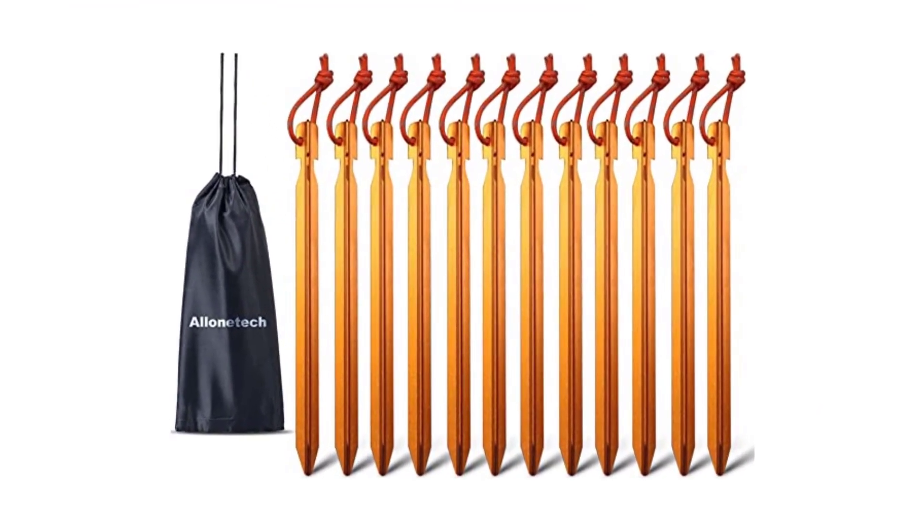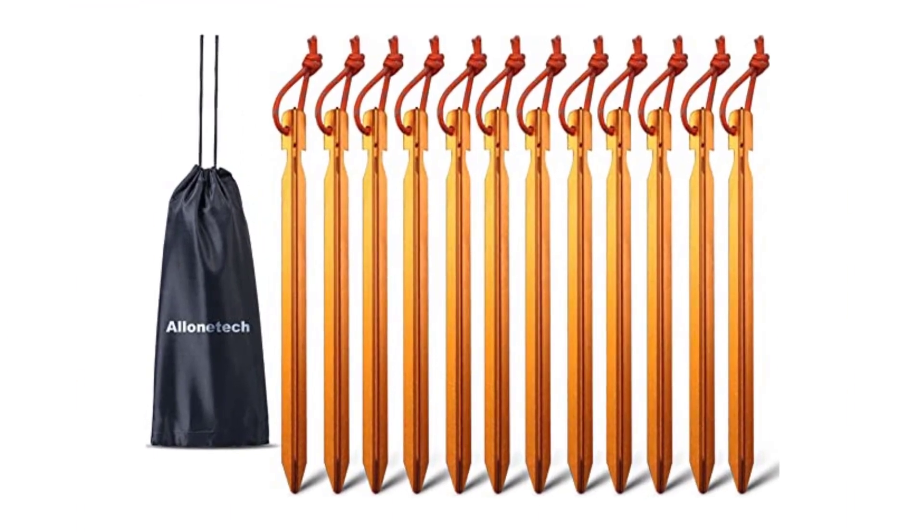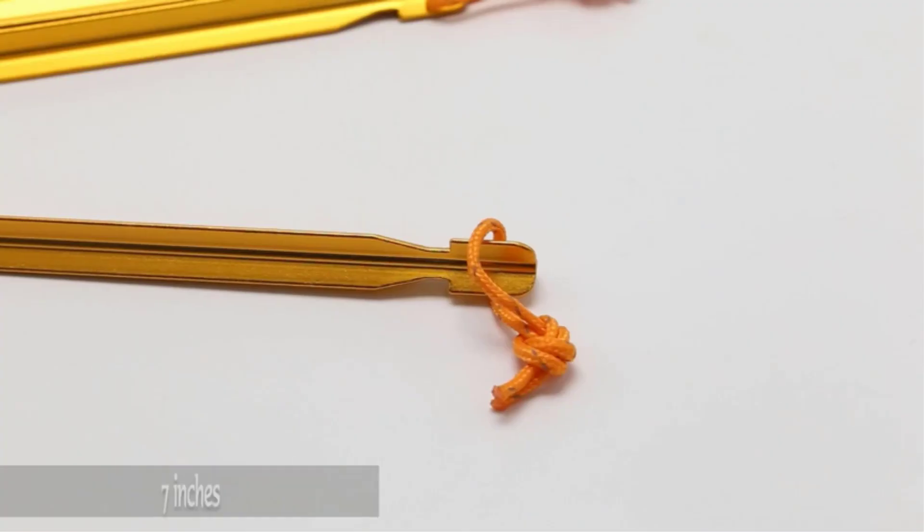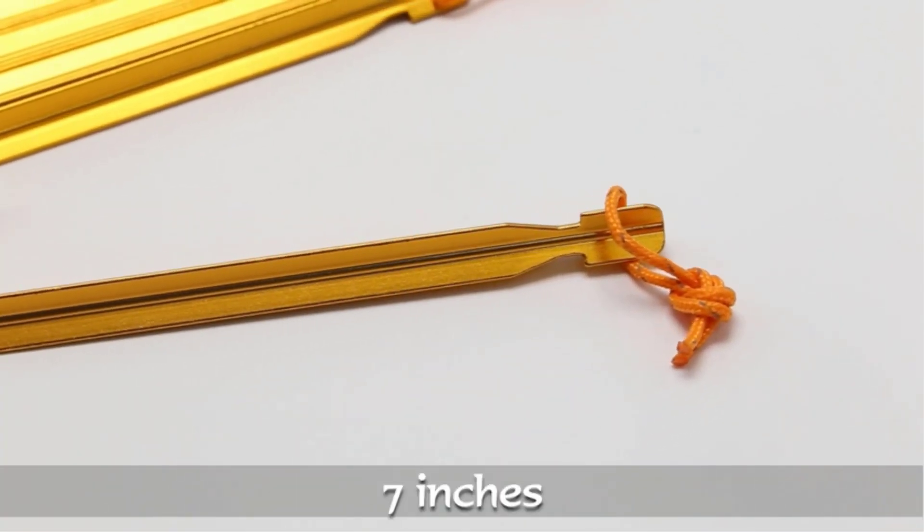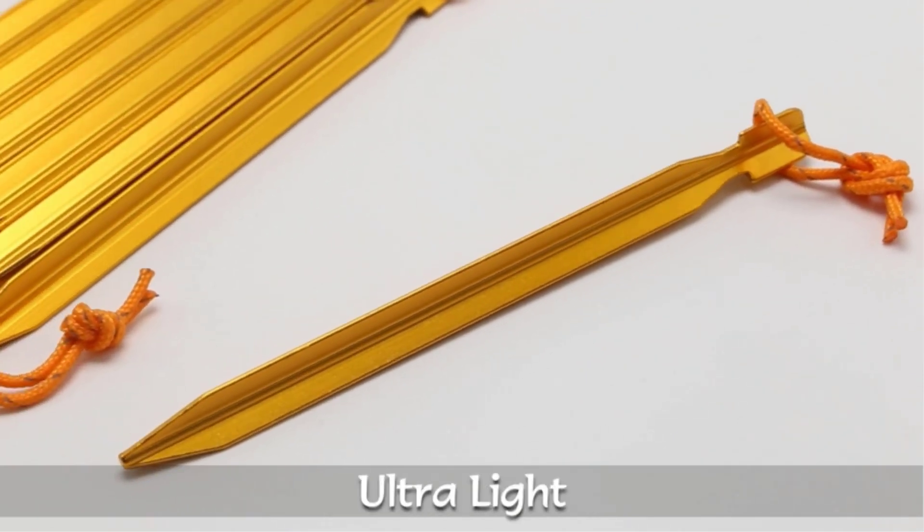They are perfect for securing your tent or other camping equipment to the ground, and they come in a pack of 10, giving you enough to set up your entire campsite. The stakes are easy to use and come with a handy carrying pouch that makes them easy to store and transport.